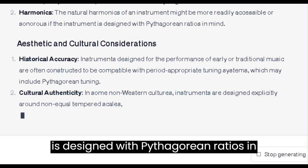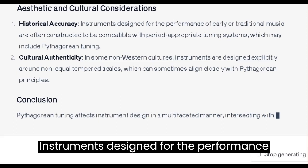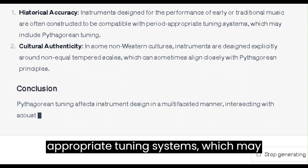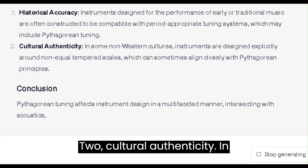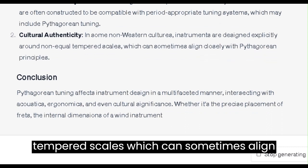Aesthetic and Cultural Considerations: 1. Historical Accuracy. Instruments designed for the performance of early or traditional music are often constructed to be compatible with period-appropriate tuning systems, which may include Pythagorean tuning. 2. Cultural Authenticity. In some non-Western cultures, instruments are designed explicitly around non-equal tempered scales, which can sometimes align closely with Pythagorean principles.